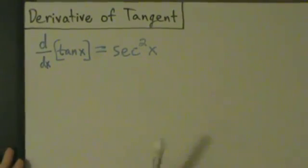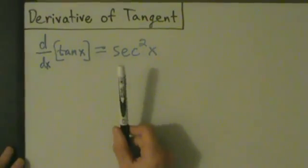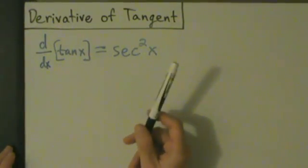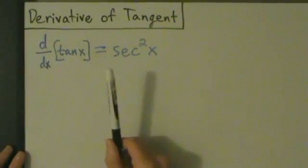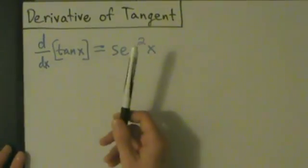Now that we talked about the quotient rule, we're ready to talk about the derivative of the tangent function and also the other three trig functions we haven't talked about yet—secant, cosecant, and cotangent—but those will be in separate videos. This is just going to be tangent here.